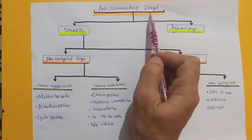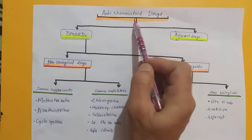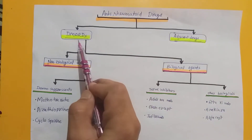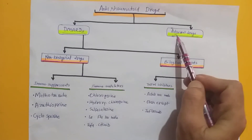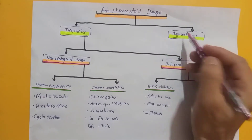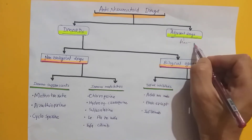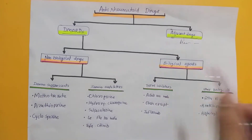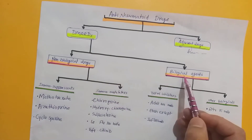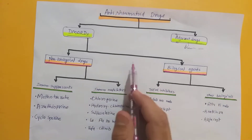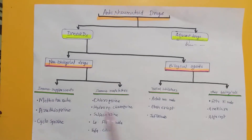In anti-rheumatoid drugs, there are two types: DMARDs and adjuvant drugs. In adjuvant drugs, there is prednisolone and other glucocorticoids. In DMARDs, there are non-biological drugs and biological drugs.